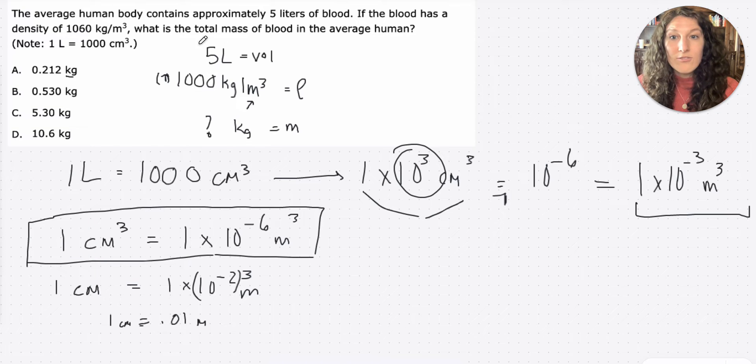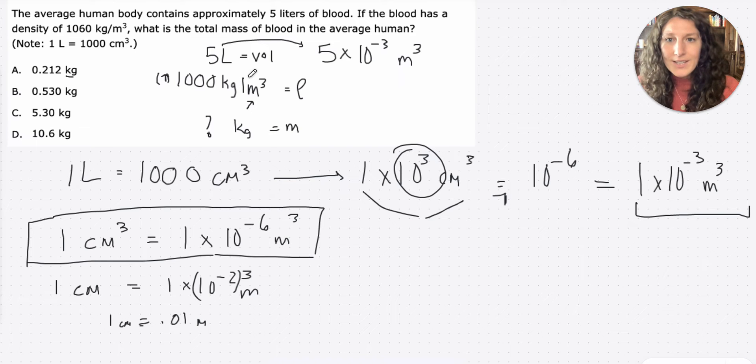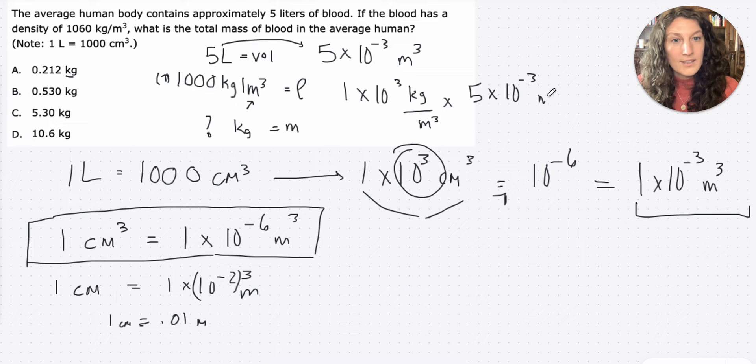So now we can convert 5 liters into meters cubed. If 1 liter is 1 times 10 to the negative 3, then 5 liters is 5 times 10 to the negative 3 meters cubed. Now we can actually do our math. We have our 1,000 kilograms per meters cubed. We're trying to get rid of meters cubed, so we need to multiply. I'm going to convert to scientific notation: 1 times 10 to the 3 kilograms over meters cubed times 5 times 10 to the negative 3 meters cubed.